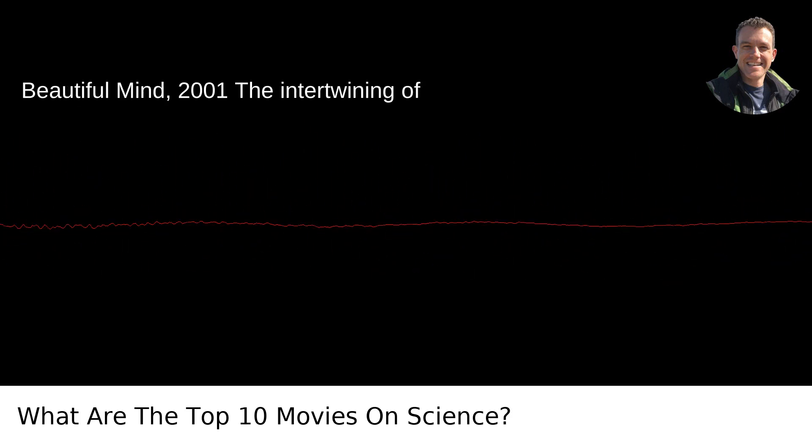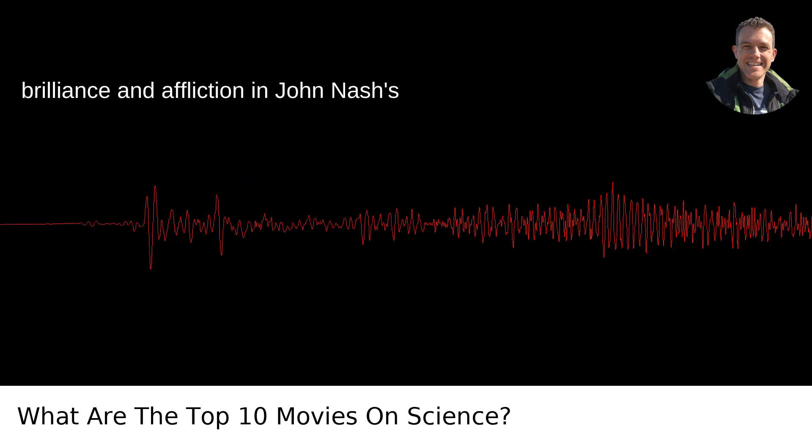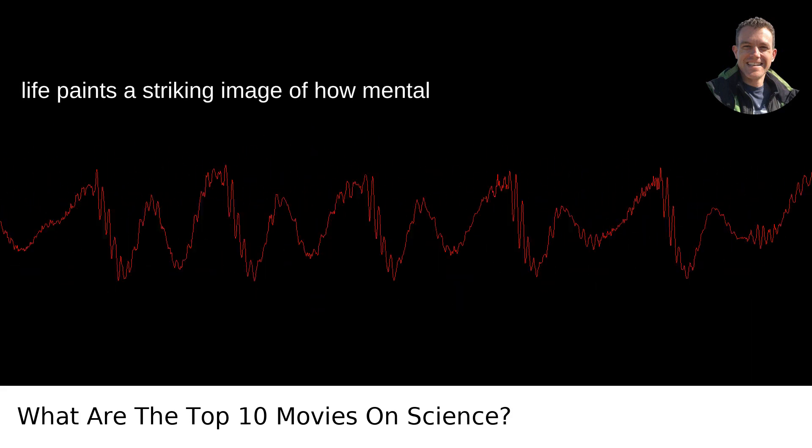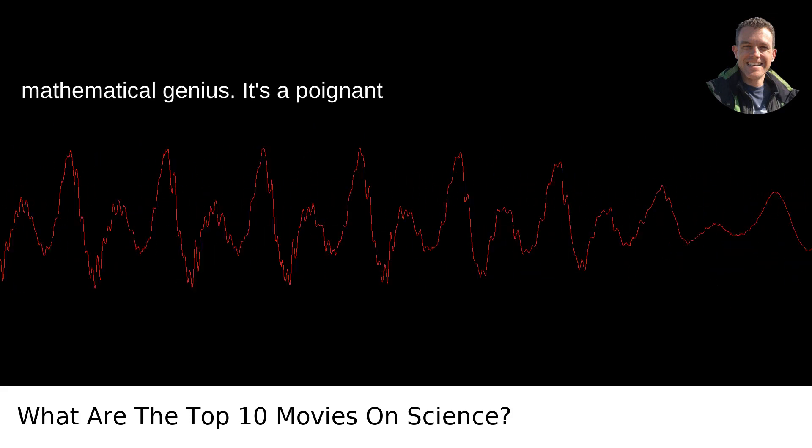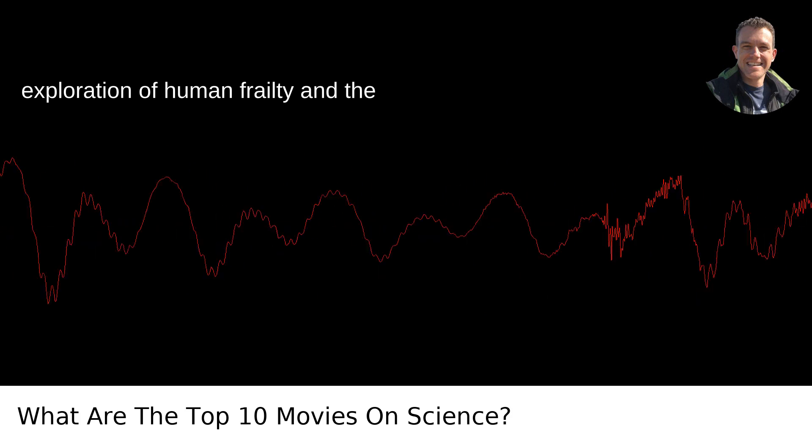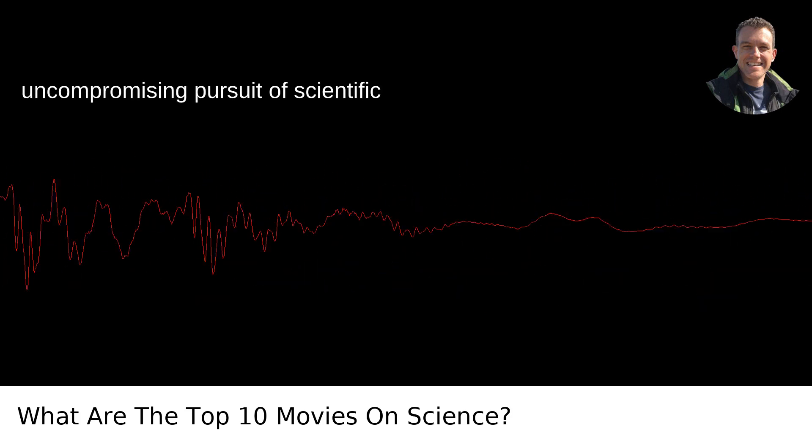1. A Beautiful Mind, 2001. The intertwining of brilliance and affliction in John Nash's life paints a striking image of how mental illness intersects with extraordinary mathematical genius. It's a poignant exploration of human frailty and the uncompromising pursuit of scientific discovery.